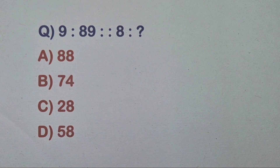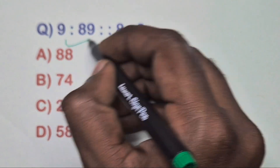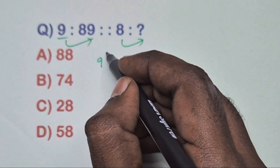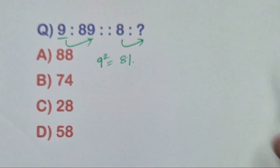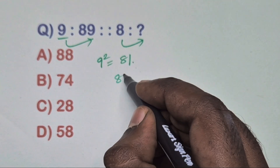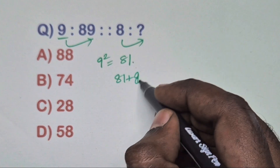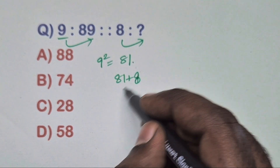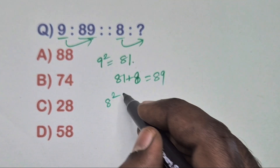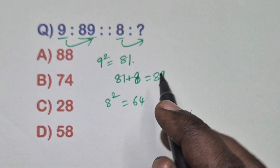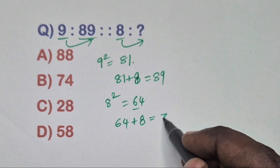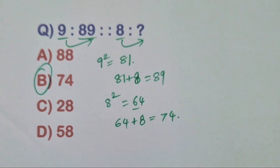Find the relation between this pair. Take 9: 9 squared is 81. Add 81 + 8 = 89. Same way, take 8: 8 squared is 64. Add 64 + 8 = 72 — sorry, that gives 74. Option B is the correct answer.